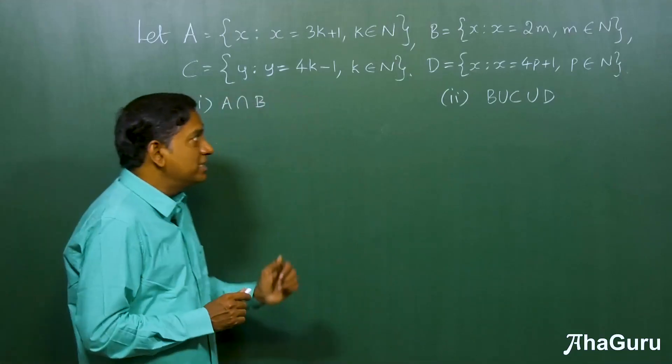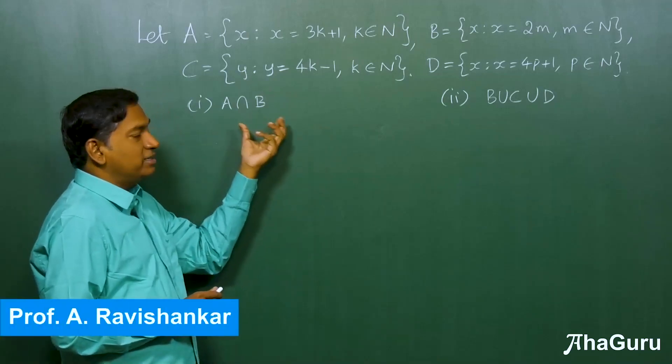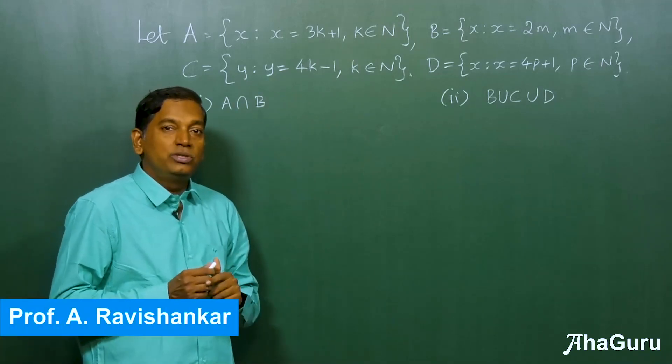In this problem, we are given sets A, B, C, D and we are asked to find A intersection B, B union C union D, etc.